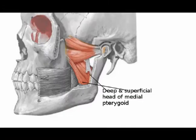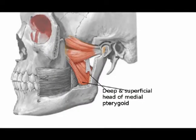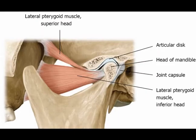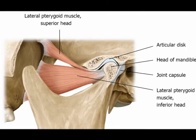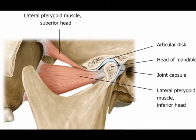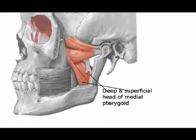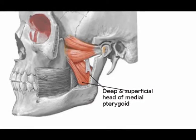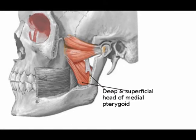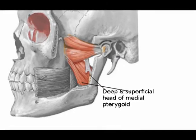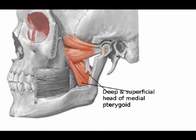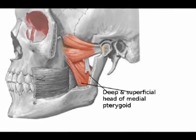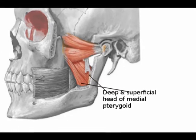The medial pterygoid muscle has two heads, a deep head and a superficial head, while the lateral pterygoid muscle also has two heads called the upper and the lower head. The medial pterygoid muscle is a thick rectangular muscle. The superficial head originates on the maxillary tuberosity of the inferior maxilla. The deep head is larger than the superficial head and originates on the medial surface of the lateral pterygoid plate of the sphenoid bone.